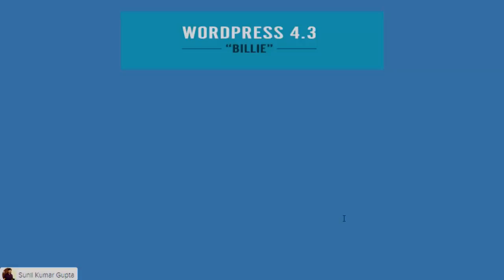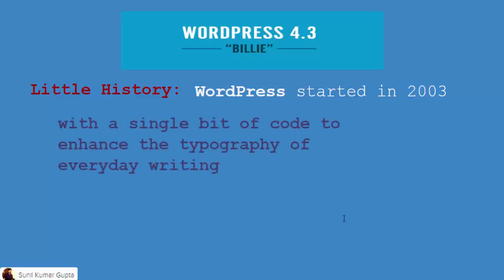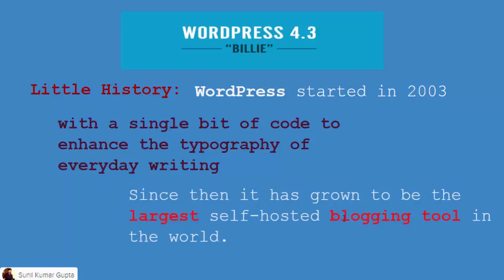We should know what is the history of WordPress. WordPress started in the year 2003 with a single bit of code to enhance the typography of everyday writing and publishing. It was aimed to simplify everyday writing and publishing on the web — writing blog posts or publishing your content. Since then it has grown to be the largest self-hosted blogging tool in the world.